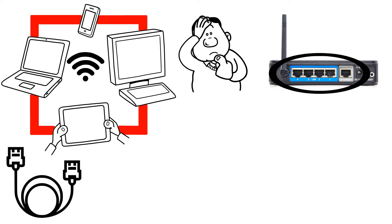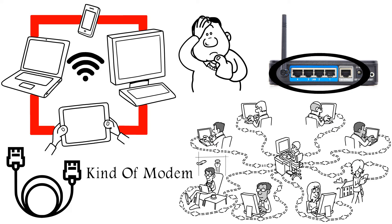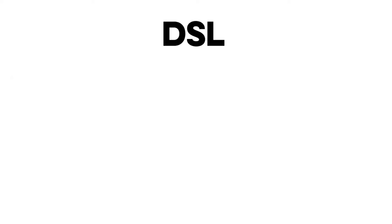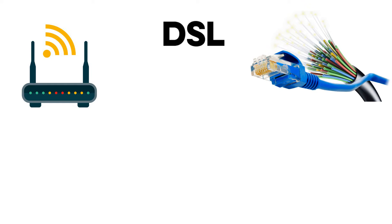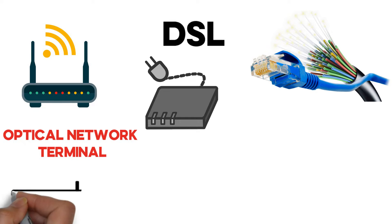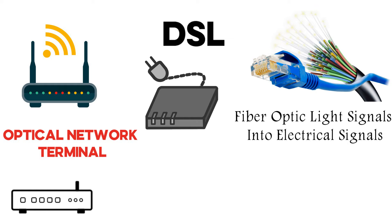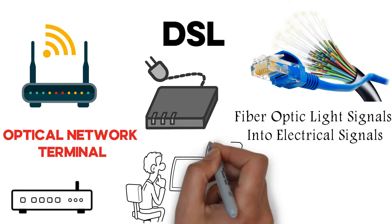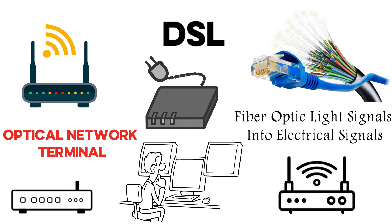However, modems are not universal solutions. The kind of modem you need depends on the type of internet service you're receiving. If it's DSL, you need a DSL modem. If your ISP offers cable internet, you'll need a cable modem. For fiber, you get an Optical Network Terminal — ONT — for converting fiber optic light signals into electrical signals that your device can recognize. There are other modem-like devices as well.